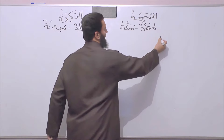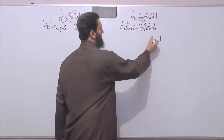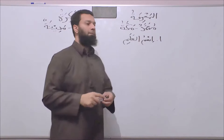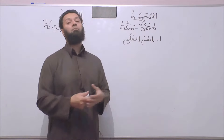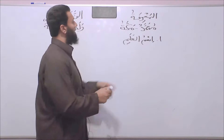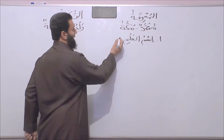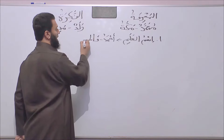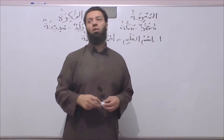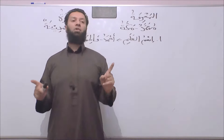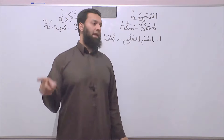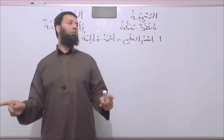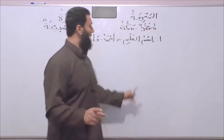The first category, as you probably gathered, is what we call ism al-alami. Ism is a noun; al-alami relates to a name. So it could be muhammadun, makkatu, ahmadu, or fatimatu. All of these are what we call ism al-alami, and this is what the grammarians use to describe a term that relates to a name. So if you're reading that in a book of grammar and you're not sure what it means, it relates to a real name — al-alami. That's the first category.